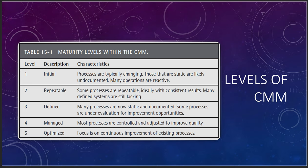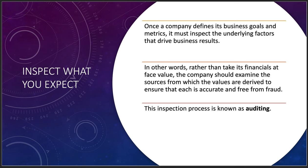Most companies are going to be at level three or four. Level 4 — Managed: most processes are controlled and adjusted to improve quality, with some kind of TQM or root cause analysis process in place. Level 5 — Optimizing: continuous improvement of existing processes. This is only for the most stable products — I don't know of anybody that's really just focused on continuous improvement. Most companies I work with are at level three or four. If you get the opportunity to work with a startup, take it — just be prepared for a lot of chaos in your day.